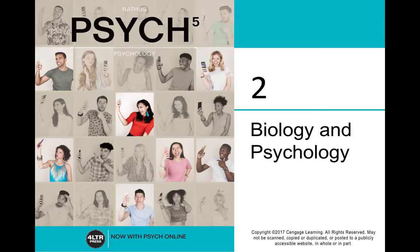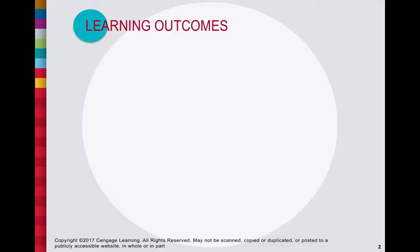Welcome back to introductory psychology and welcome to the second chapter of our course in the Rathus textbook. Today we're going to jump into the chapter on biology and psychology — some textbooks call it biopsychology. This is the section where biology and psychology converge together. Last chapter we talked about defining psychology as the scientific study of human behavior and mental processes.